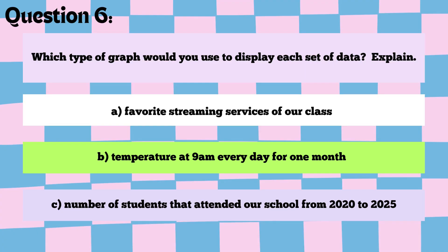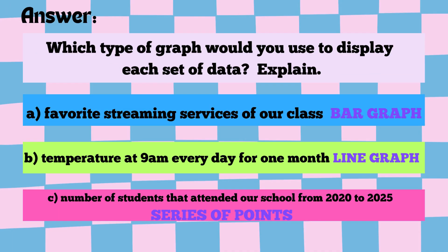For the next question, we are looking at which type of graph we would use to display each set of data. The first is the favorite streaming services of our class. For this, we would choose a bar graph. Bar graphs are ideal for categorical data — each streaming service is a separate category, and the height of each bar shows how many students chose each service, allowing easy visual comparison between categories.